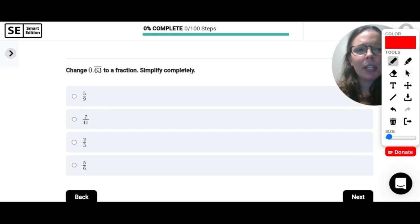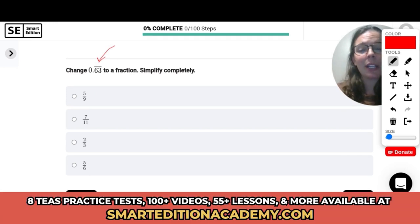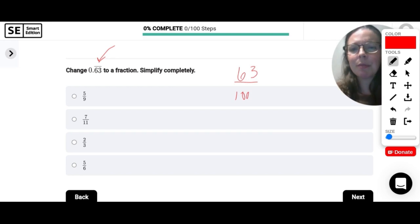Change 0.63 repeating. So this line on the top, remember that means repeating to a fraction and simplify completely. So when you have a repeating decimal like this, this is 63 hundredths. So 63 hundredths would be if it wasn't repeating. So the little trick here is instead of 100, this is just 99. So this is 63 over 99. And now all I have to do is simplify this. So it looks like we can divide both of these by 9. So 63 divided by 9 is 7. 99 divided by 9 is 11. So 7 elevenths.